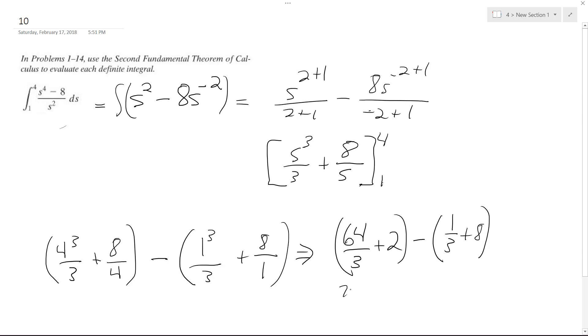So we end up with 70 over three minus, this is 24, 25 over three. And we get 45 over three.